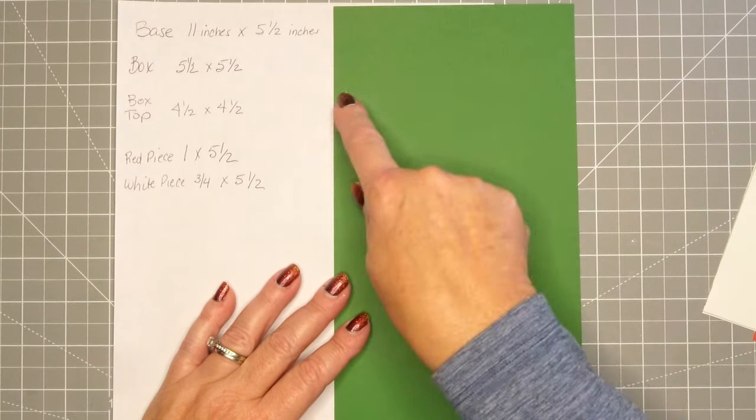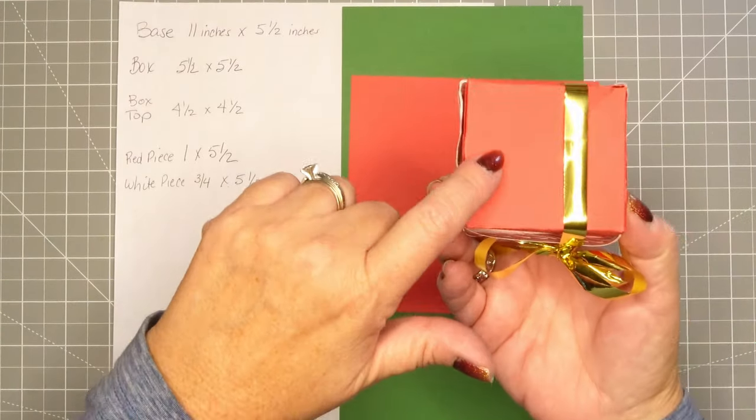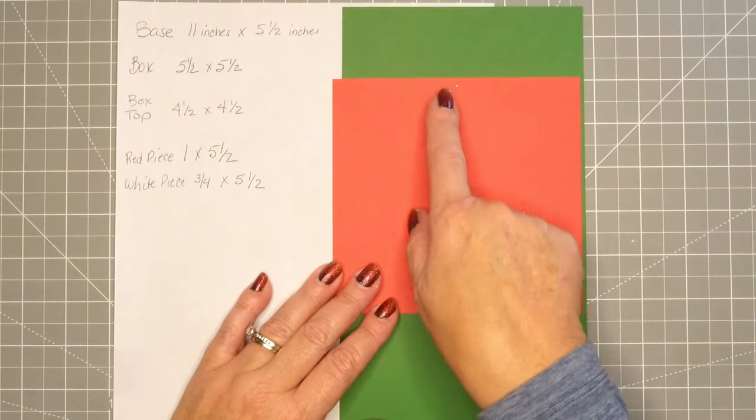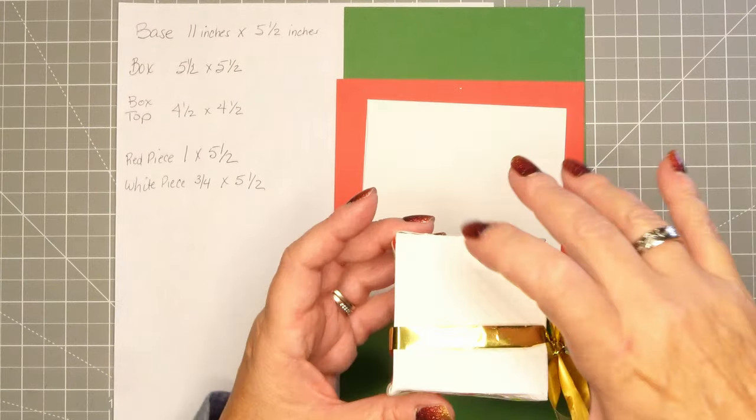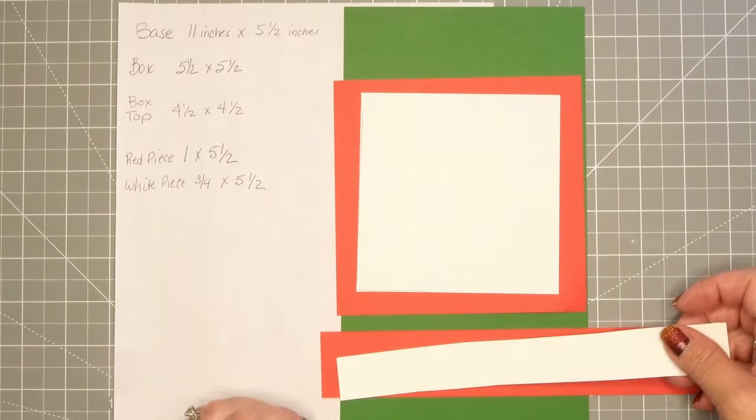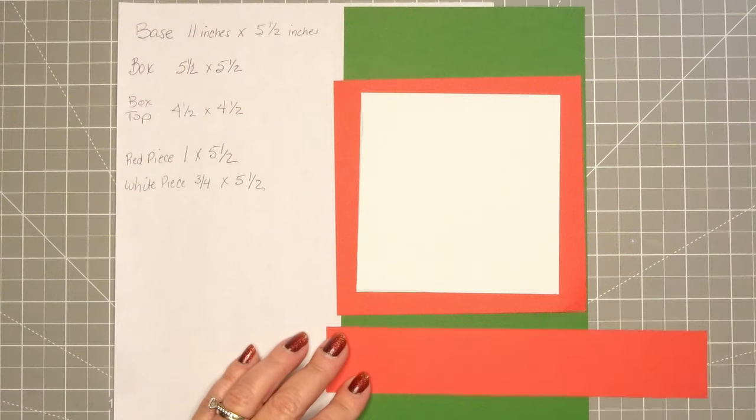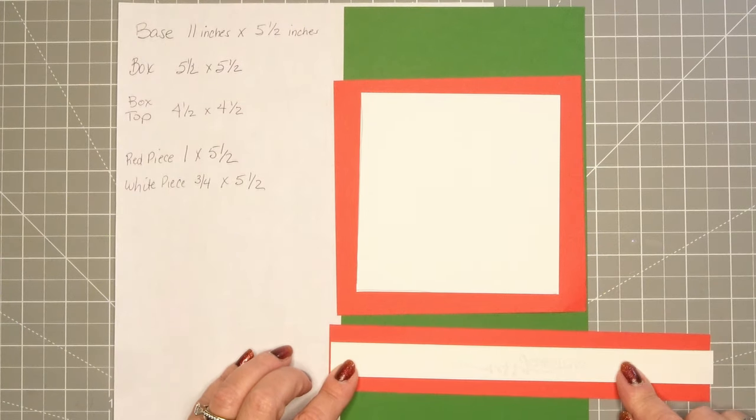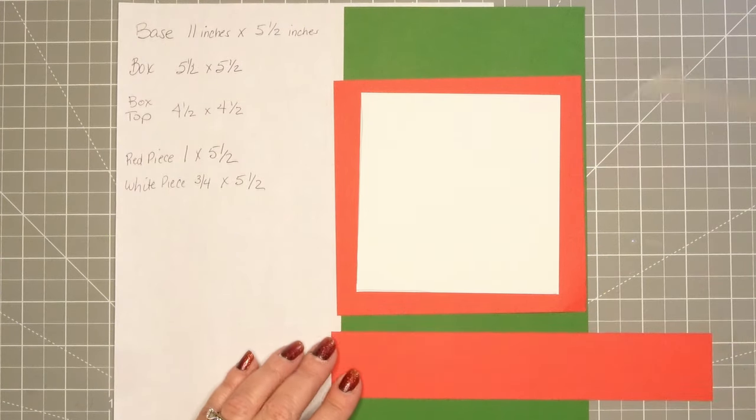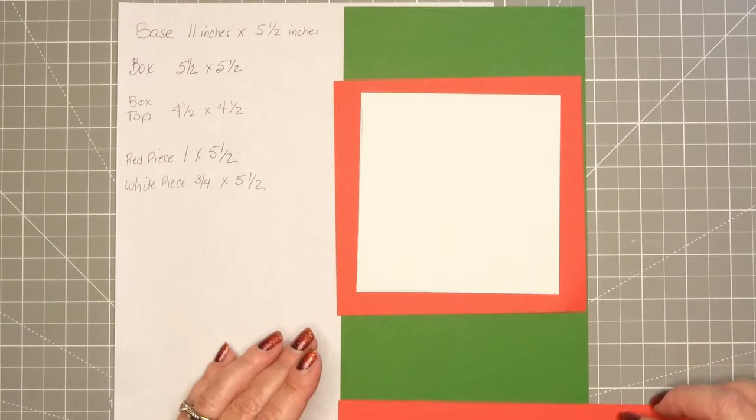So the base is 11 inches by 5.5, then the base of the box is 5.5 by 5.5. Box top is 4.5 by 4.5, and then you've got your red and white pieces that are the sentiment strip on the front, 1 by 5.5 and 0.75 by 5.5 inches. So all of my sizes are in inches.